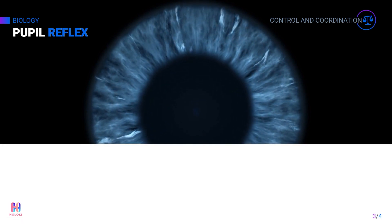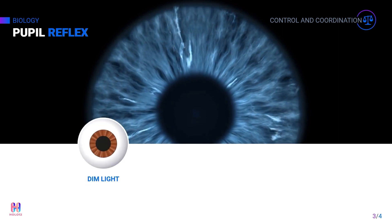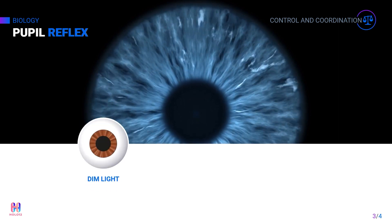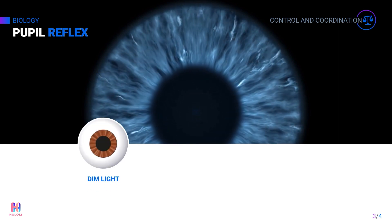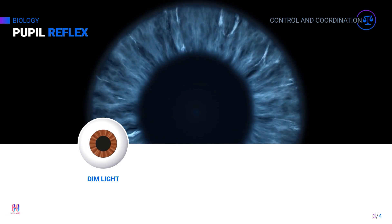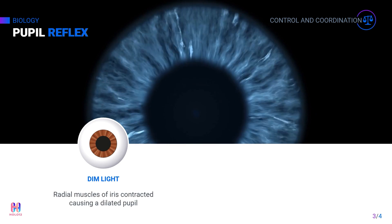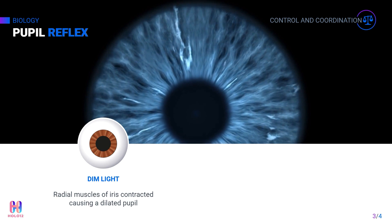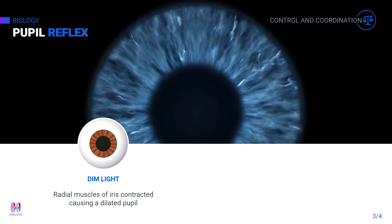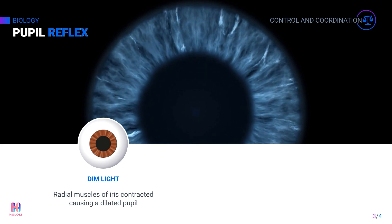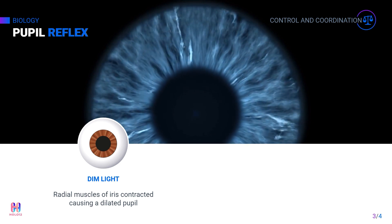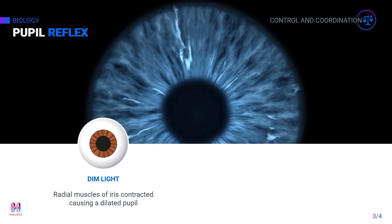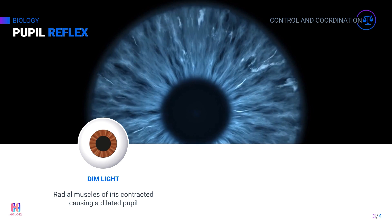Whenever you enter a dark room or a room with dim light, you cannot see anything at first because your pupils are accommodated to bright light and are therefore smaller. In dim light, the eye receptors detect low light levels, which trigger contraction of the radial muscles and relaxation of the circular muscles. This makes the pupils widen.